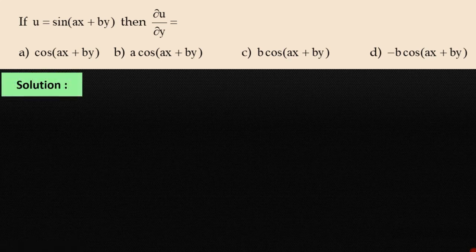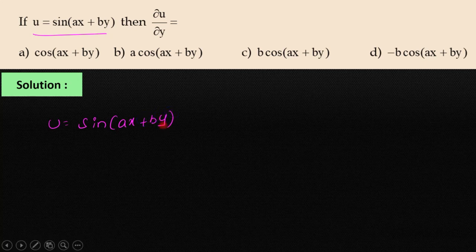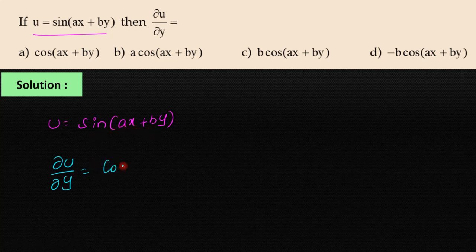Given u = sin(Ax + By). Now, partially differentiating with respect to y on both sides, we get ∂u/∂y = cos(Ax + By) into ∂/∂y of (Ax + By).